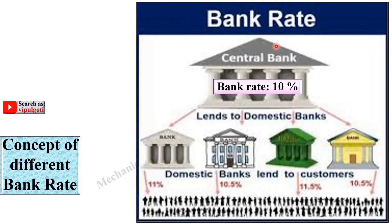From this figure you can understand the concept of bank rate. The central bank has a bank rate of 10%, so all domestic banks can borrow money from the central bank at 10%. The bank then lends to people at rates higher than 10% — such as 11%, 10.5%, or 11.5% — and that margin is the profit of the bank.